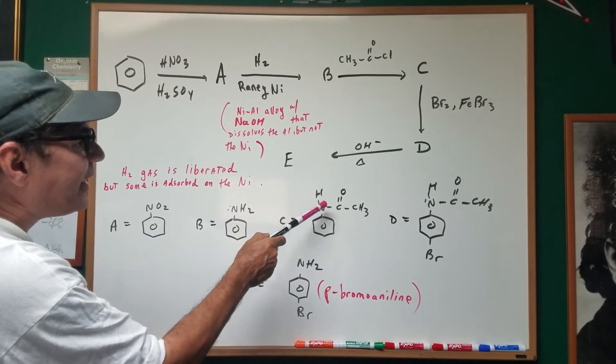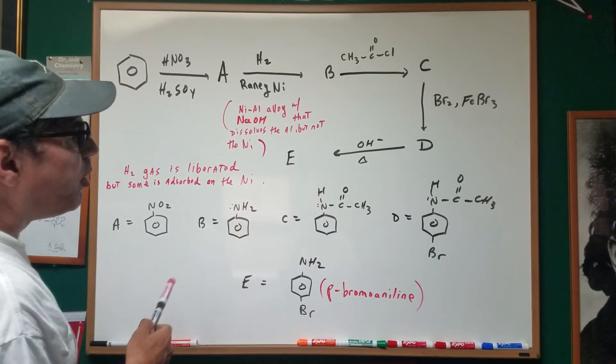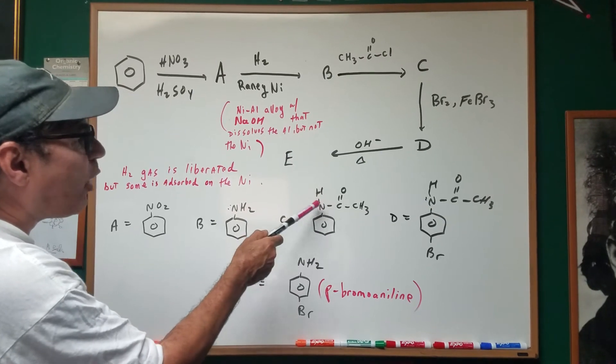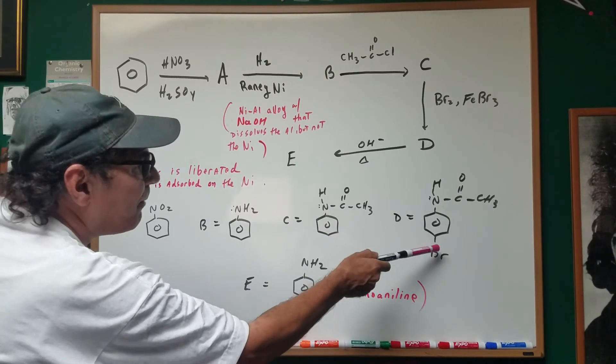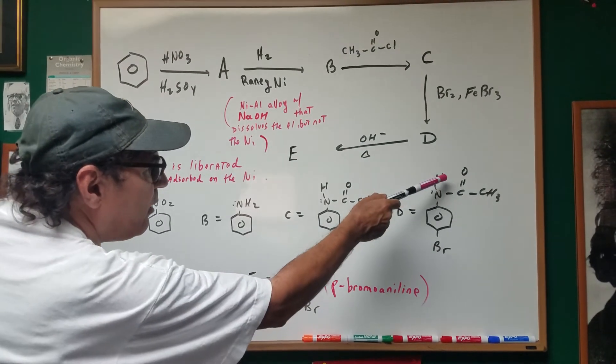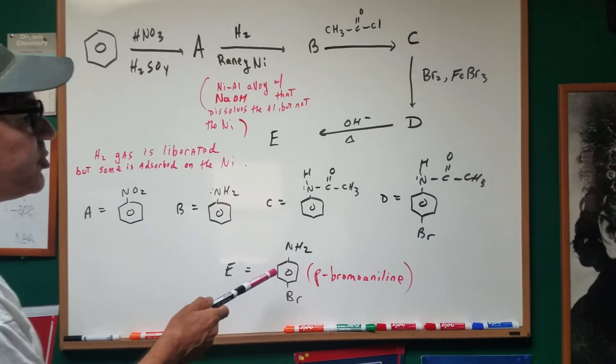This is a very big electron donating group, and it's going to direct ortho-para, but it's so big, we're going to direct the bromine, mainly into the para position. And then, we hydrolyze this group.